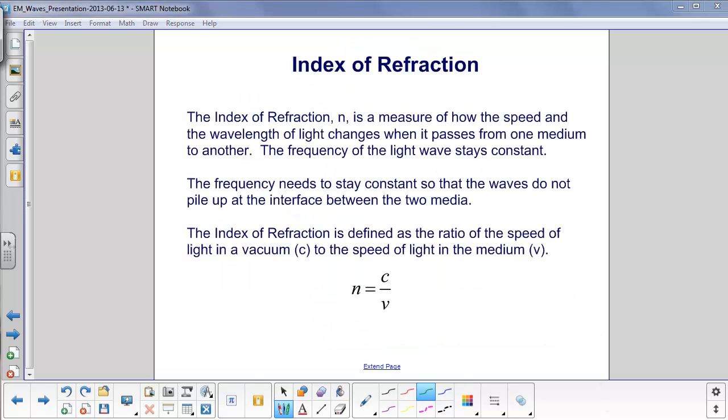The index of refraction, N, is a measure of how the speed and the wavelength of light changes when it passes from one medium to another. It's very important that this is taken note of right here. The frequency of the light wave, whether it's in air, water, or any media, stays exactly the same. Again, frequency is how many cycles per second go by.